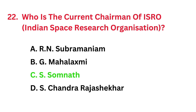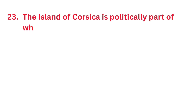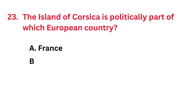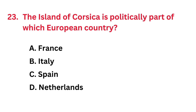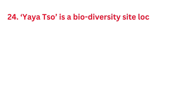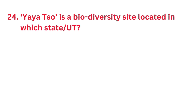The island of Corsica is politically part of which European country? The correct answer is option A: France. Yaya So is a biodiversity site located in which state/UT?